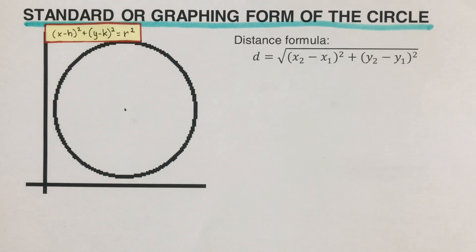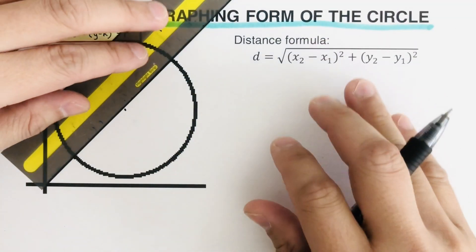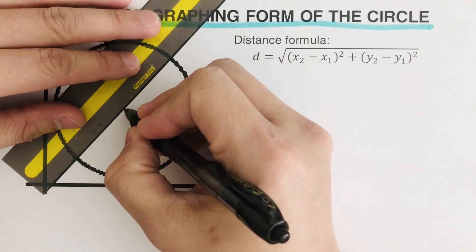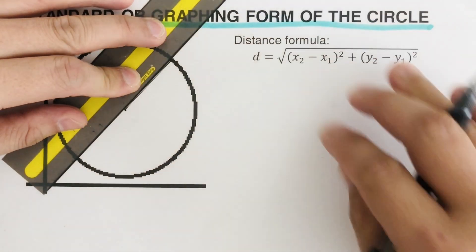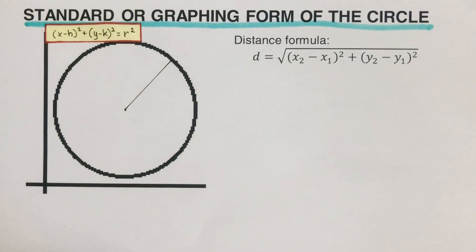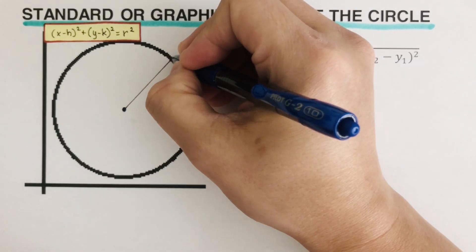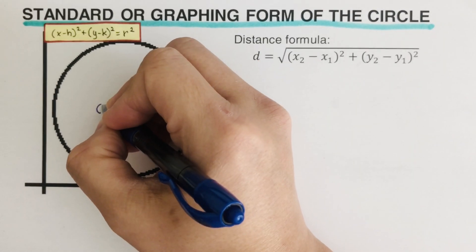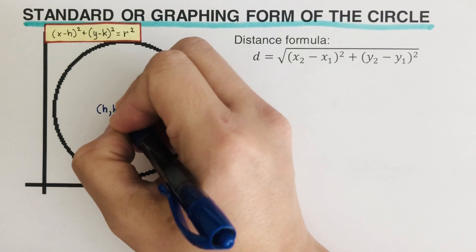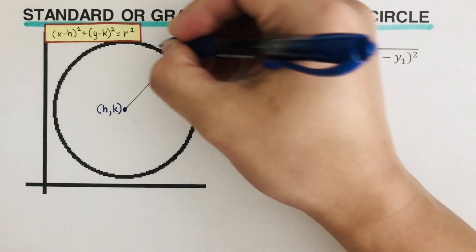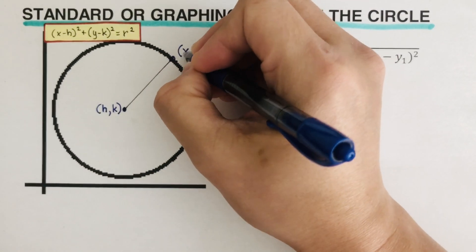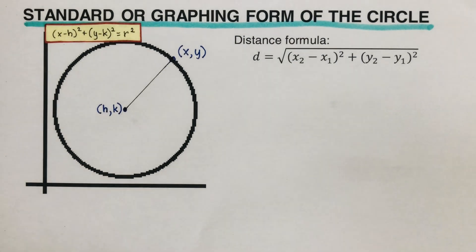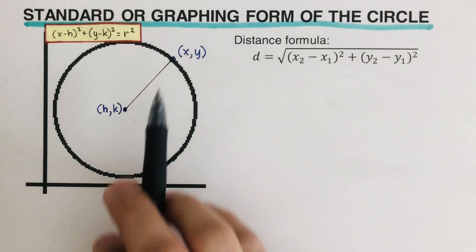First, we need to draw a radius. We're going to choose a coordinate point on the circle and another point for the center. We'll name the center as (h, k), so the ordered pair of the center is (h, k). The point on the circle we will name as (x, y). This line here is the radius, and remember that the length of the radius is the same all throughout.